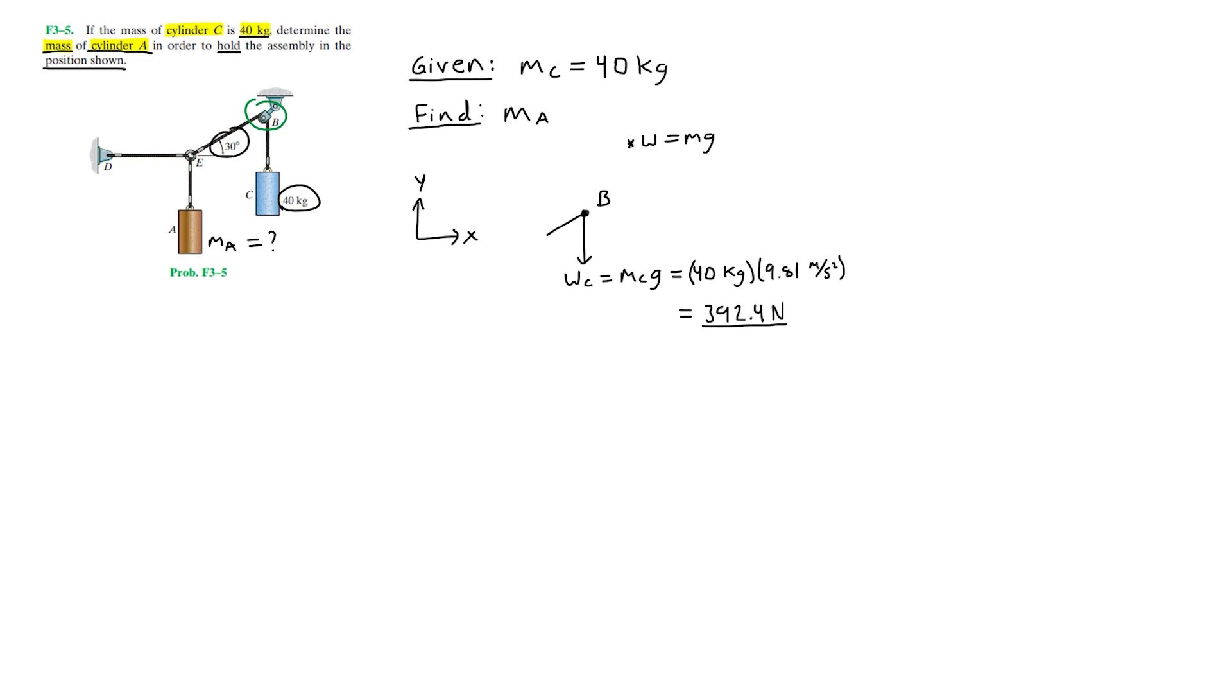We also need to account for the force that is transmitted through the wire BE, which is created by the weight of the cylinder. This acts at an angle from the vertical axis.